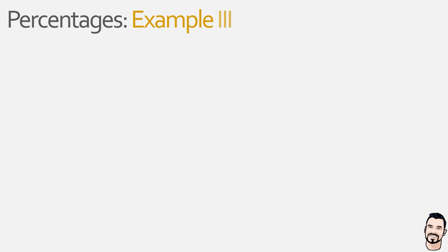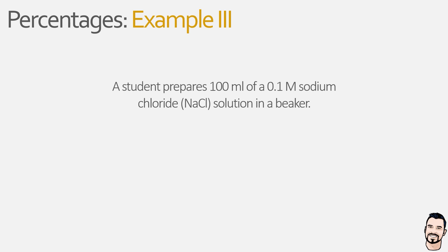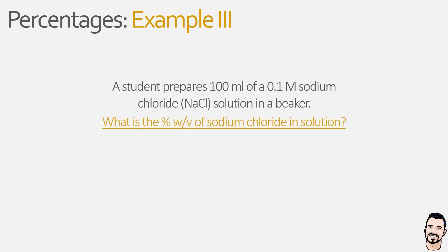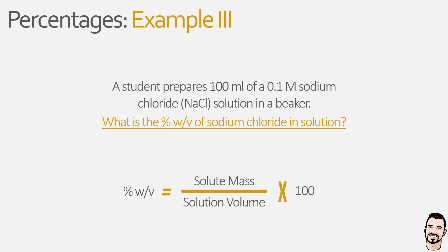Moving on to our final and slightly more complex example: a student is in the lab and prepares 100 millilitres of a 0.1 molar sodium chloride solution in a beaker. The student wants to know what is the percentage weight per volume of the sodium chloride solution. Bringing up our associated equation, percentage weight per volume equals solute mass divided by solution volume multiplied by 100. We can start adding information — percentage weight per volume equals our solute mass, which we don't know right now, divided by 100 millilitres multiplied by 100. Now there is a problem in that we haven't directly been given the solute mass; however, we have been given a molar concentration, meaning we can calculate it. For those not up to speed with moles and molarity, please go through the moles and molarity videos.